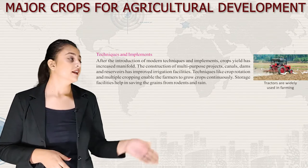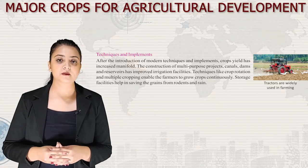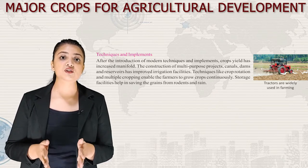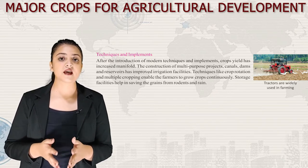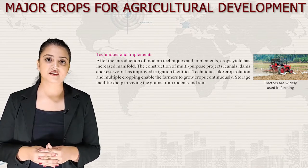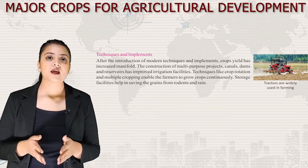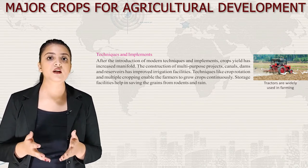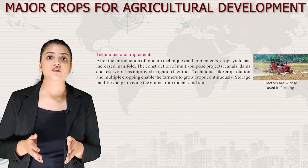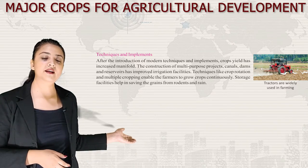The second factor is techniques and implements. After the introduction of modern techniques and implements, crop yield has increased manifold. The construction of multi-purpose projects, canals, dams and reservoirs has improved irrigation facilities. Techniques like crop rotation and multiple cropping enable the farmer to grow crops continuously. Storage facilities help in saving the grains from rodents and rain.